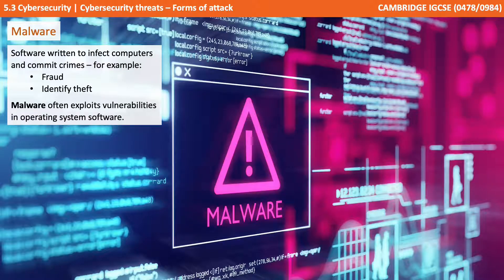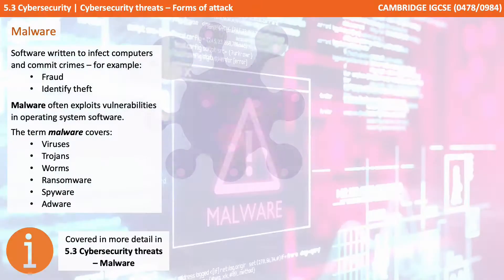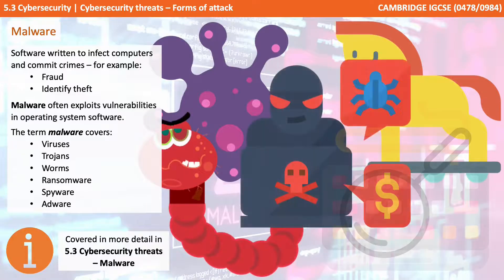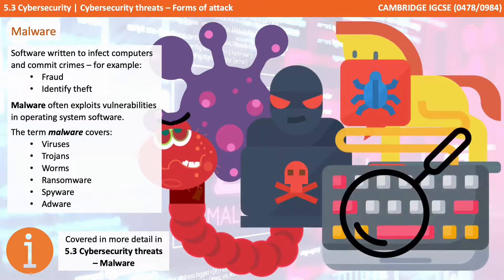Malware is software written to infect computers and commit crimes, for example fraud and identity theft. Malware often exploits vulnerabilities in operating system software. The term malware covers a range of different types including viruses, trojans, worms, ransomware, spyware and adware. We're going to cover this in more detail in another video.